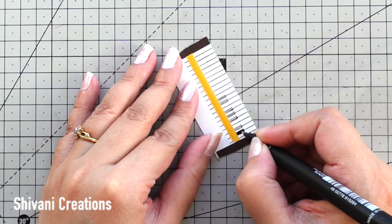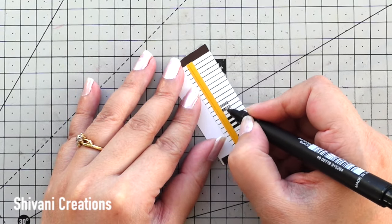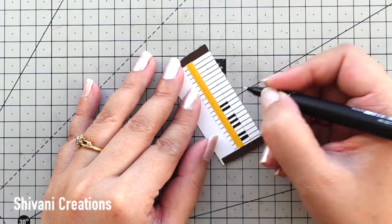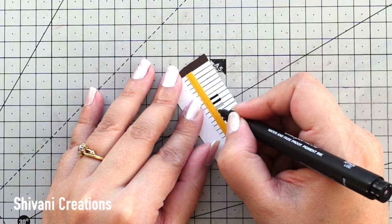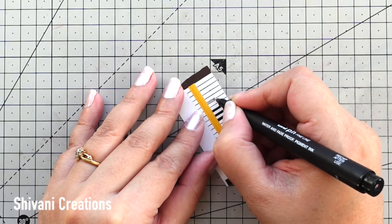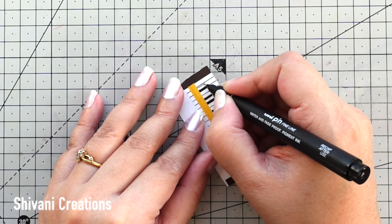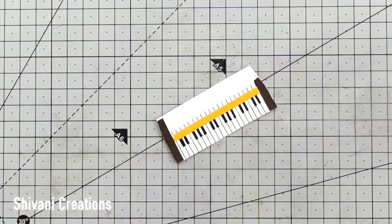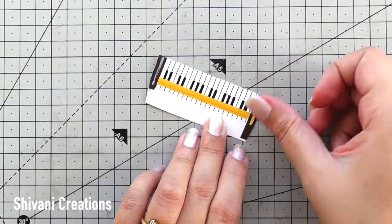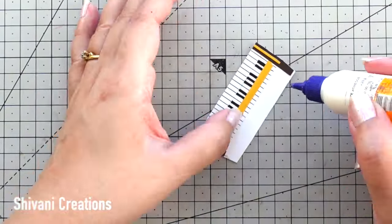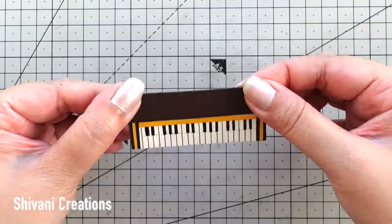Like this, and then I will start drawing the keys alternately: 2 keys, then 3 keys, then 2 keys and so on using black marker. So the keys are ready. Now I am sticking the small thin strip in golden color on both the sides and then attaching brown color sheet on top, like this.